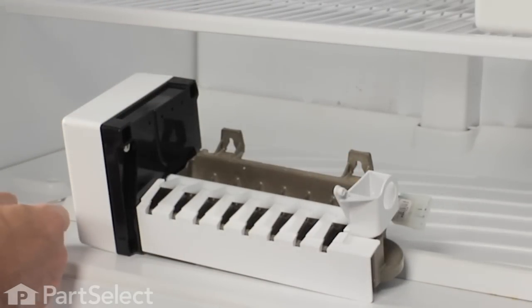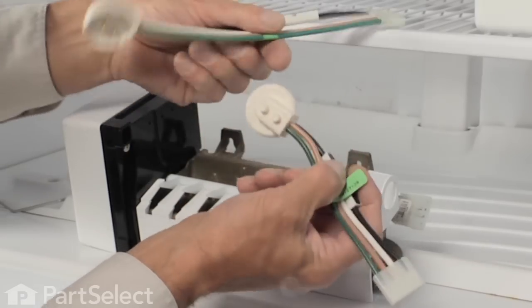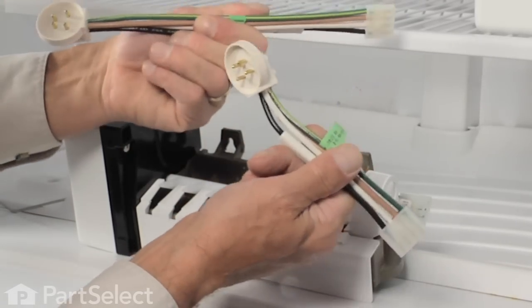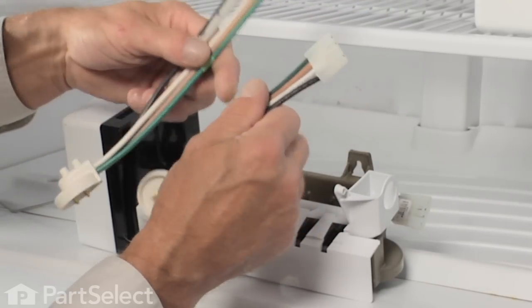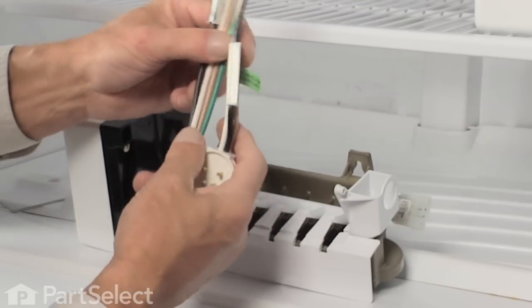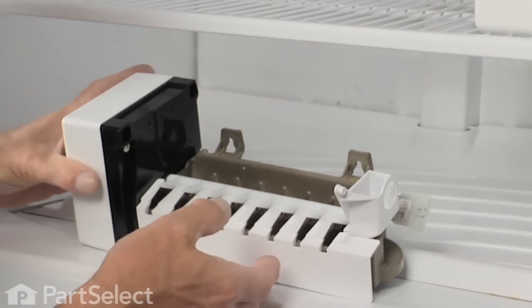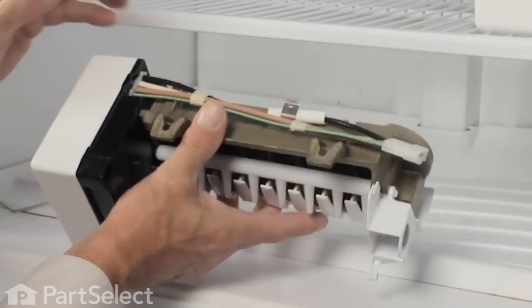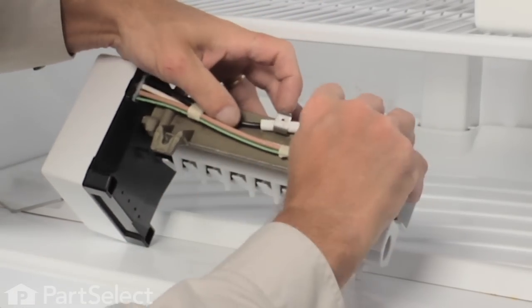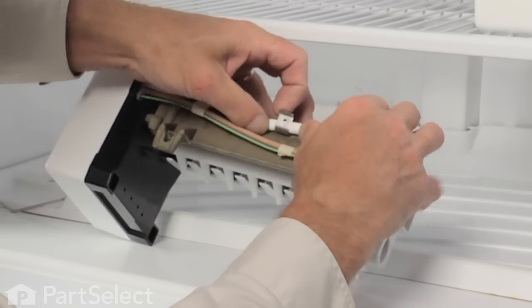Now your ice maker kit probably came with several different wire harnesses. Select the one that matches the harness that is on the existing ice maker. If there isn't one, remove the harness from your old ice maker.